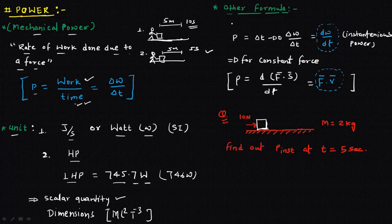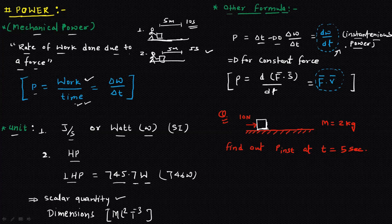There is one more formula for power. Starting from P = ΔW / ΔT, if we take the time period close to zero, we can write it as dW/dt. This gives us the instantaneous power. We can also put a specific value of t into this differential equation to find the instantaneous power at that moment.